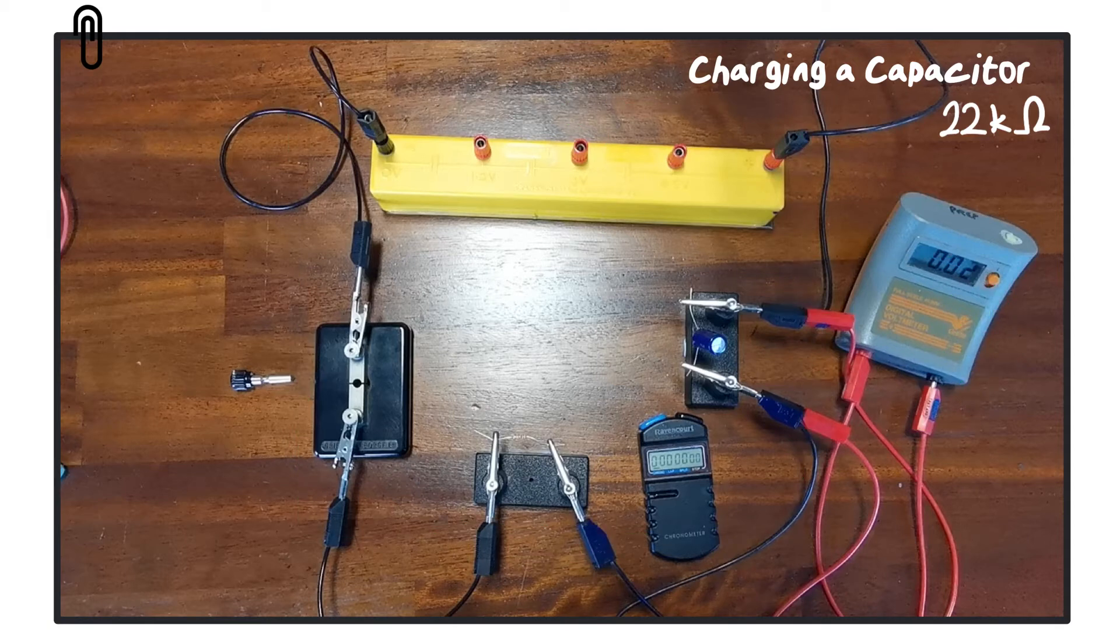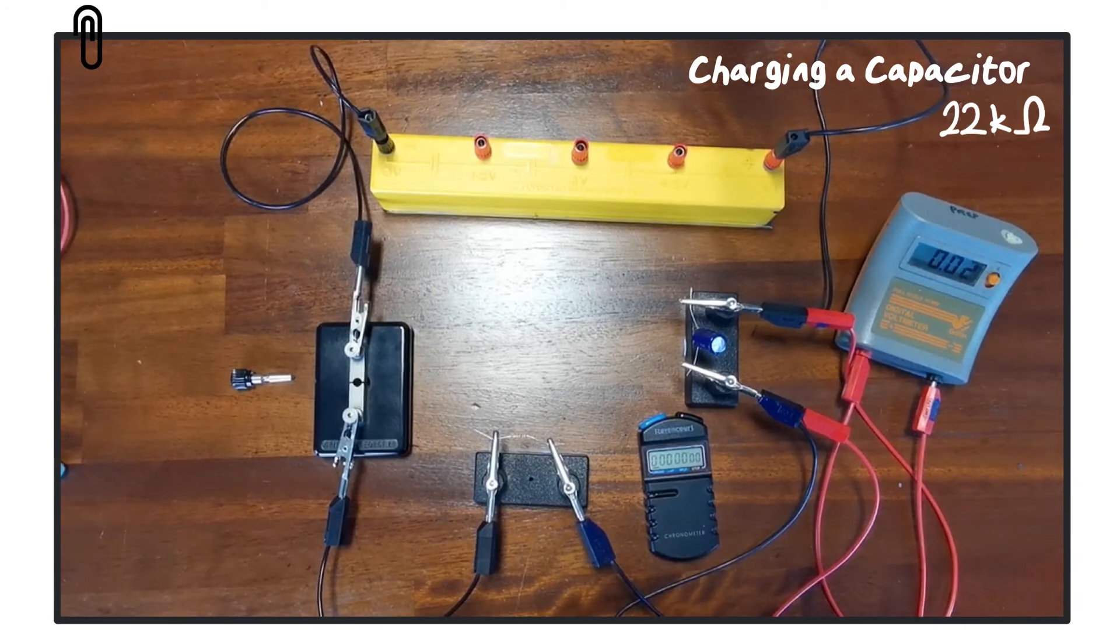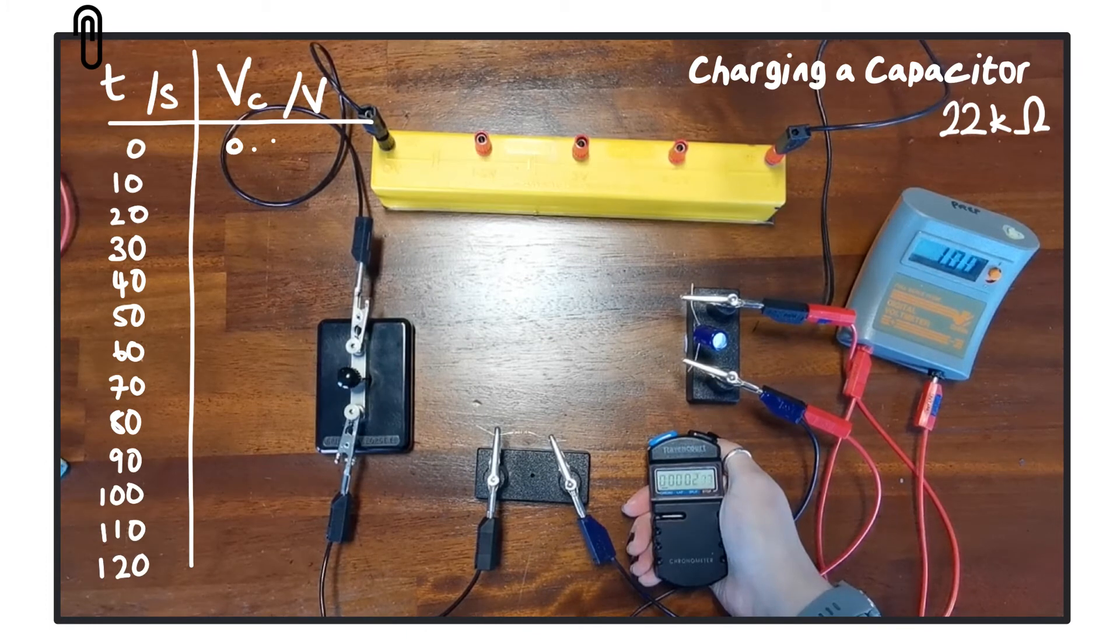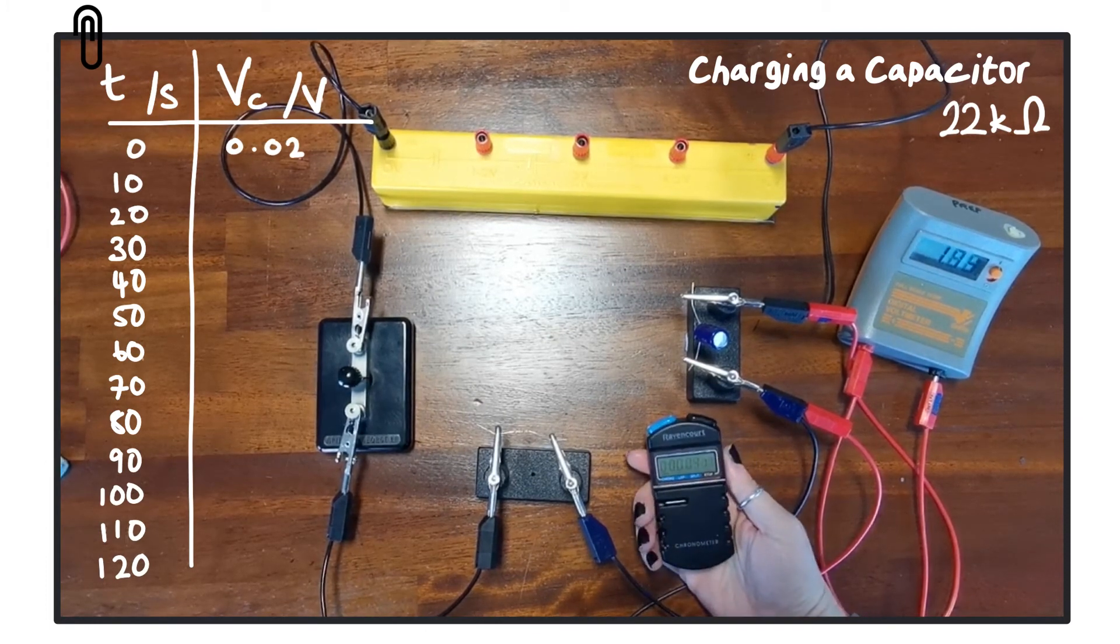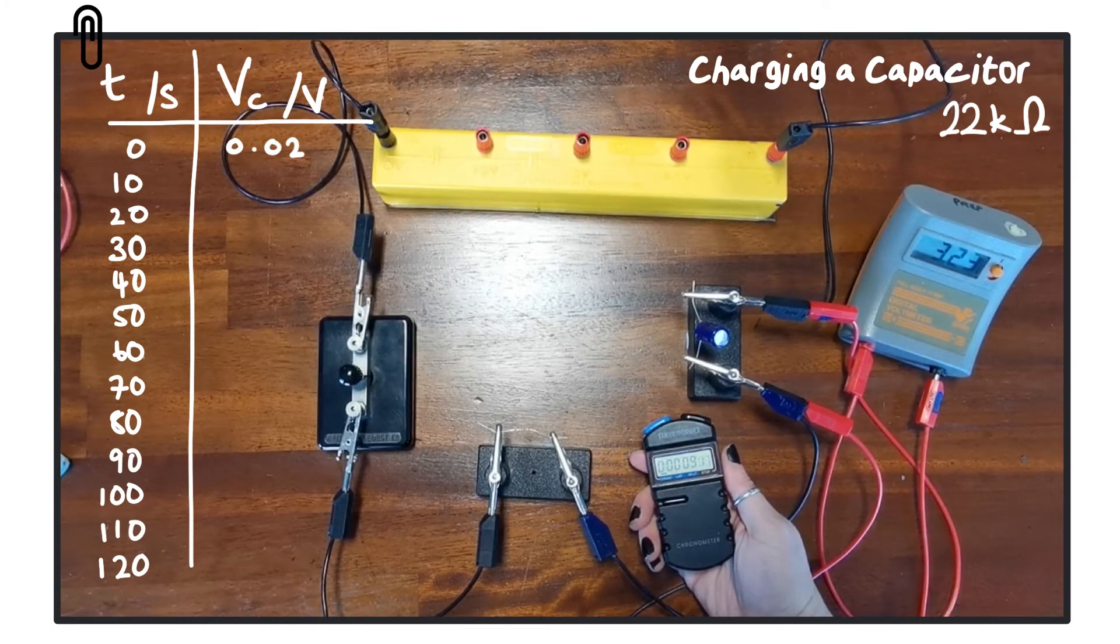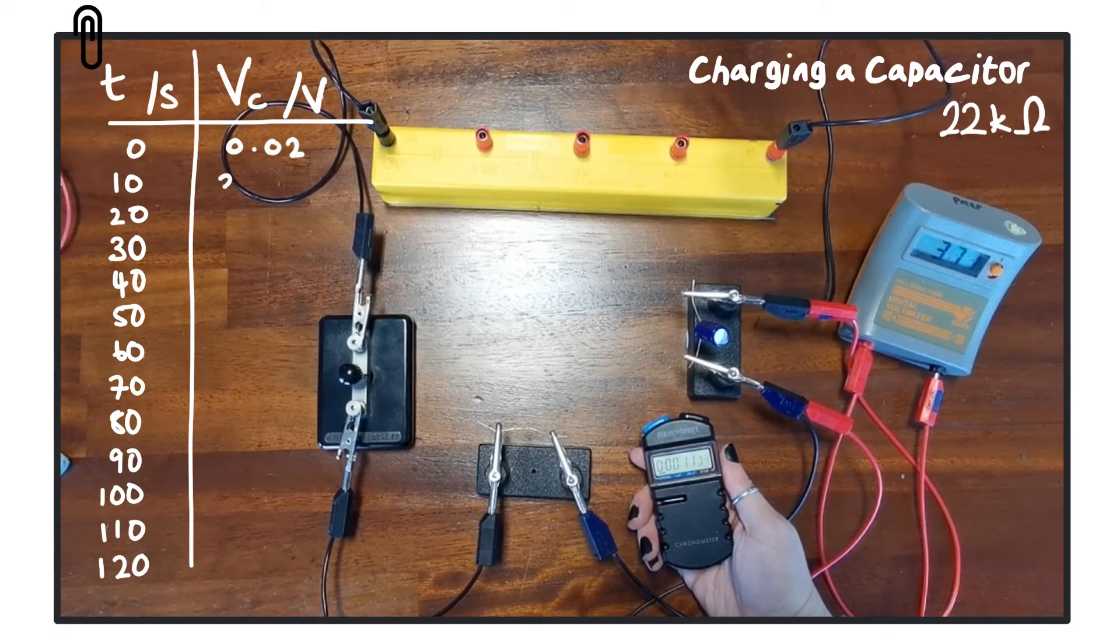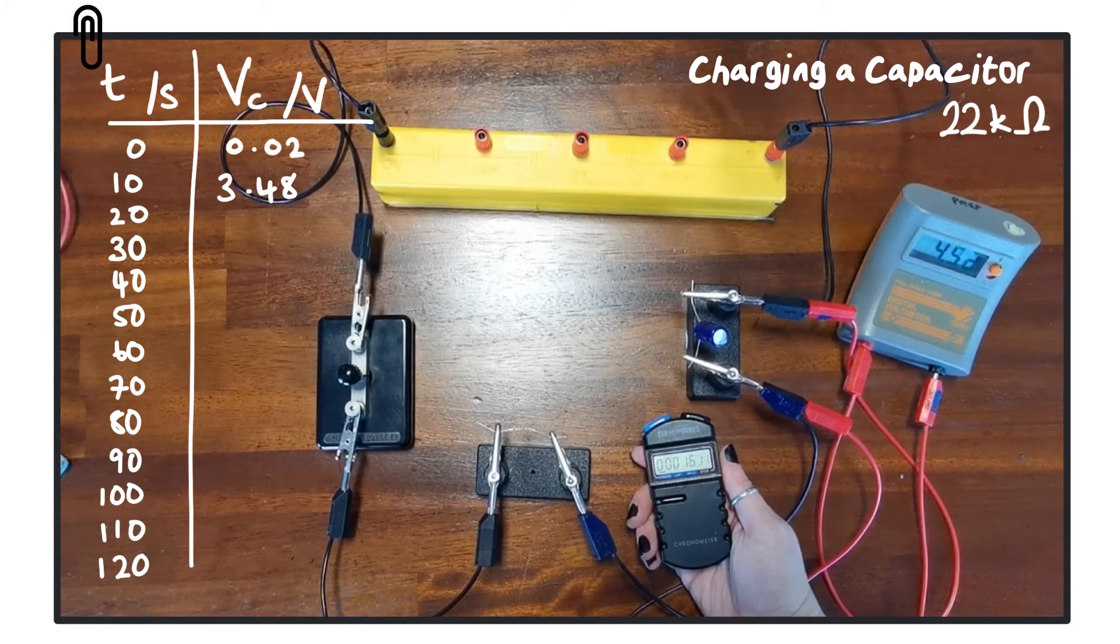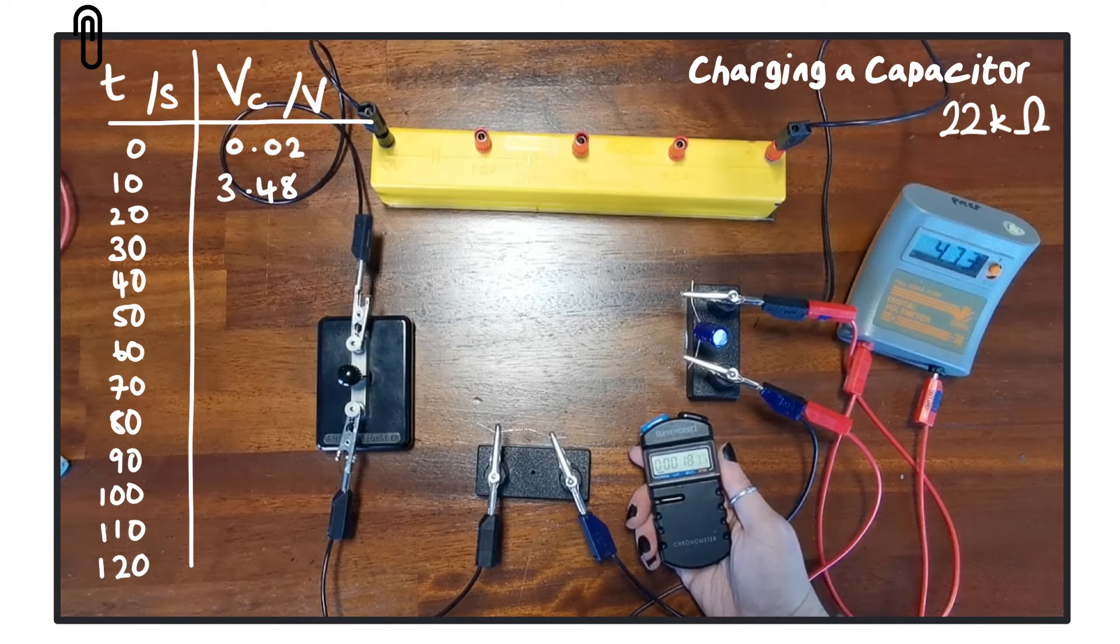So what we will do is we will close the switch and then start the timer at the same time, and then record the potential difference from across the capacitor every 10 seconds and we'll do that for two minutes. Just a note: whenever we begin, we should make sure that the capacitor is fully discharged, meaning that the voltmeter should read zero. As you can see here there's a very small reading on the voltmeter of 0.02 volts. That could be down to either a fault within the capacitor or simply human error in that the capacitor wasn't discharged fully before beginning.